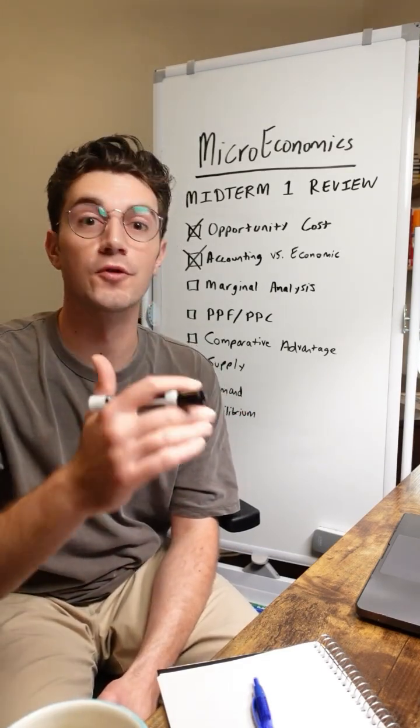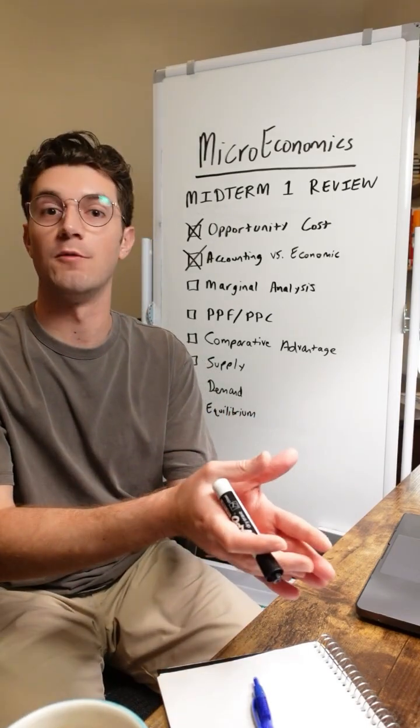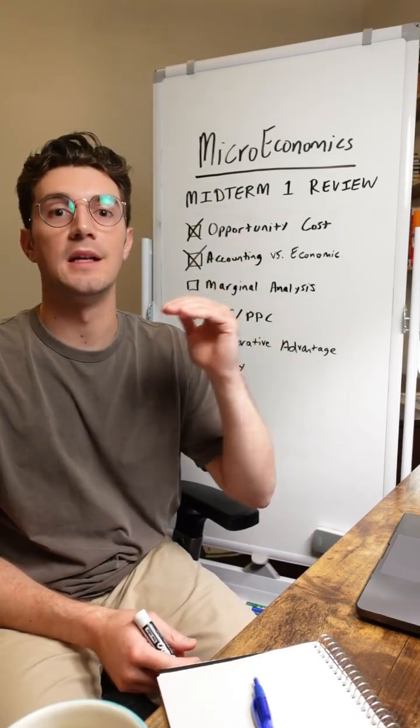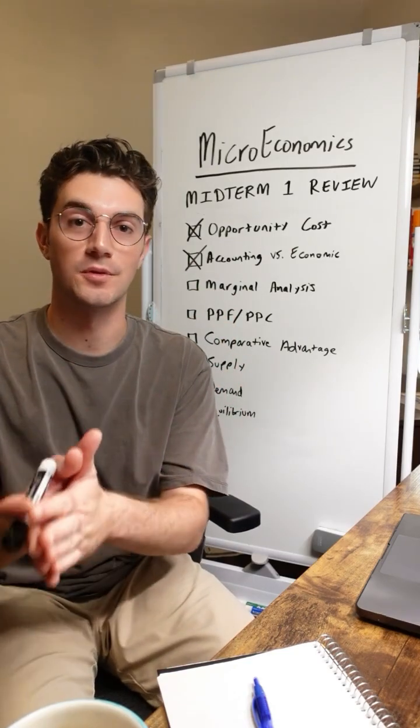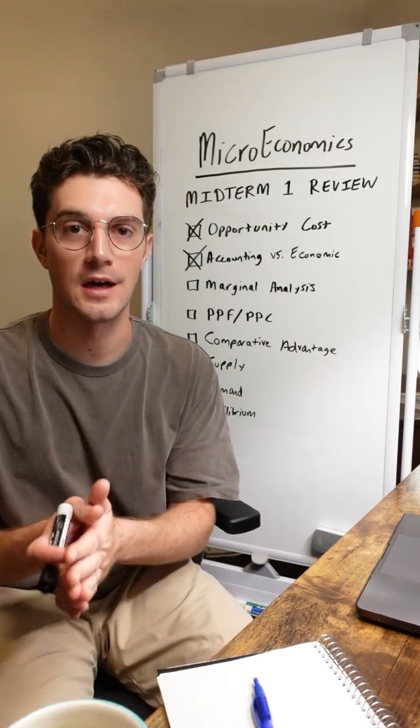Because once the marginal benefit falls below the marginal cost, then we're essentially taking a loss by taking one more unit. So just go unit by unit and calculate the marginal benefit and marginal cost, and you will consume up until the point where marginal benefit falls below marginal cost.